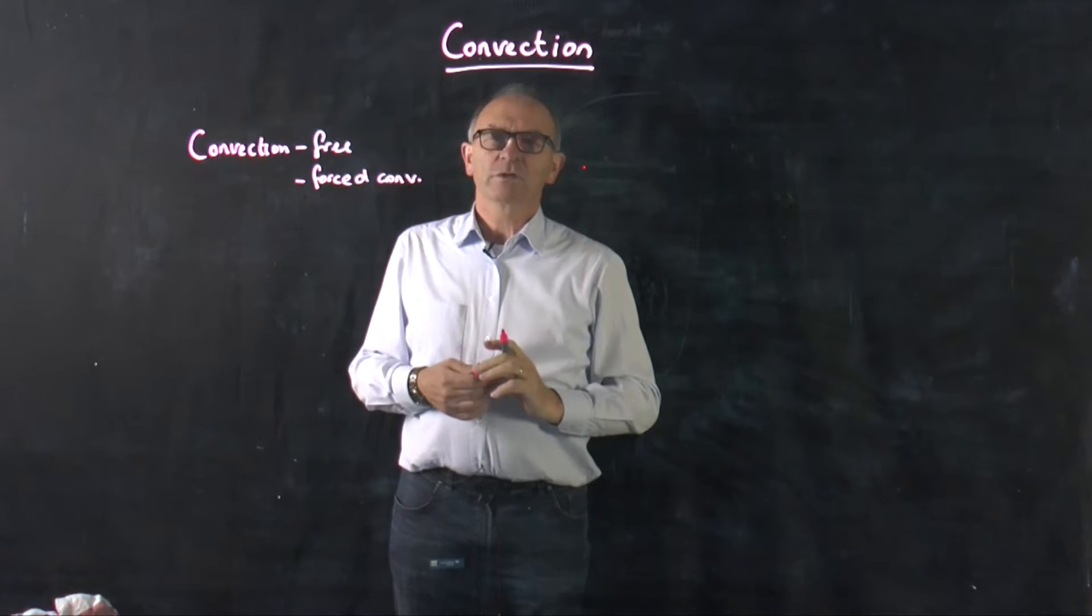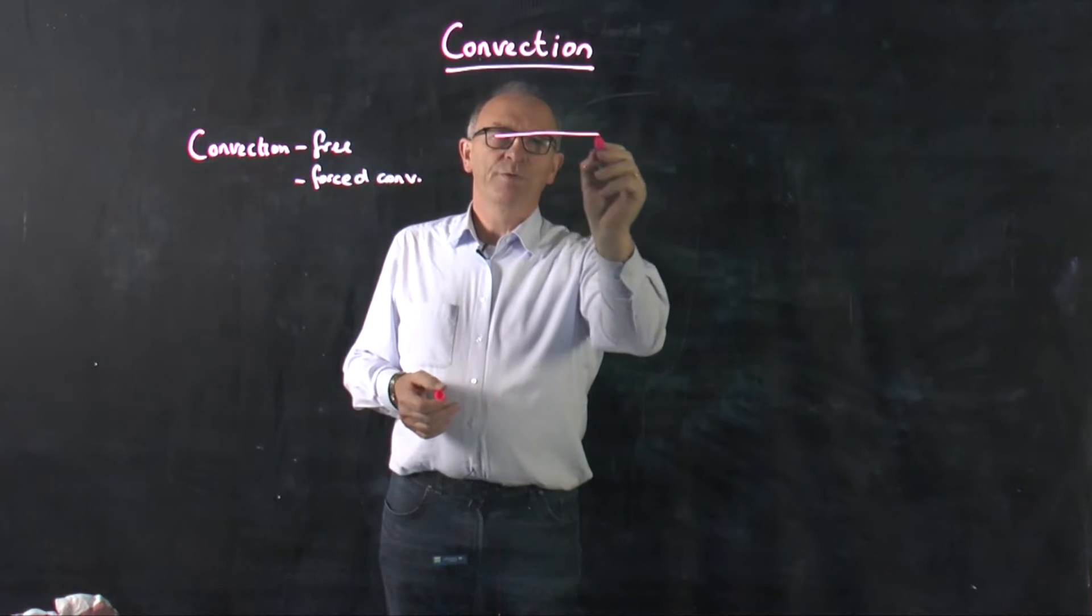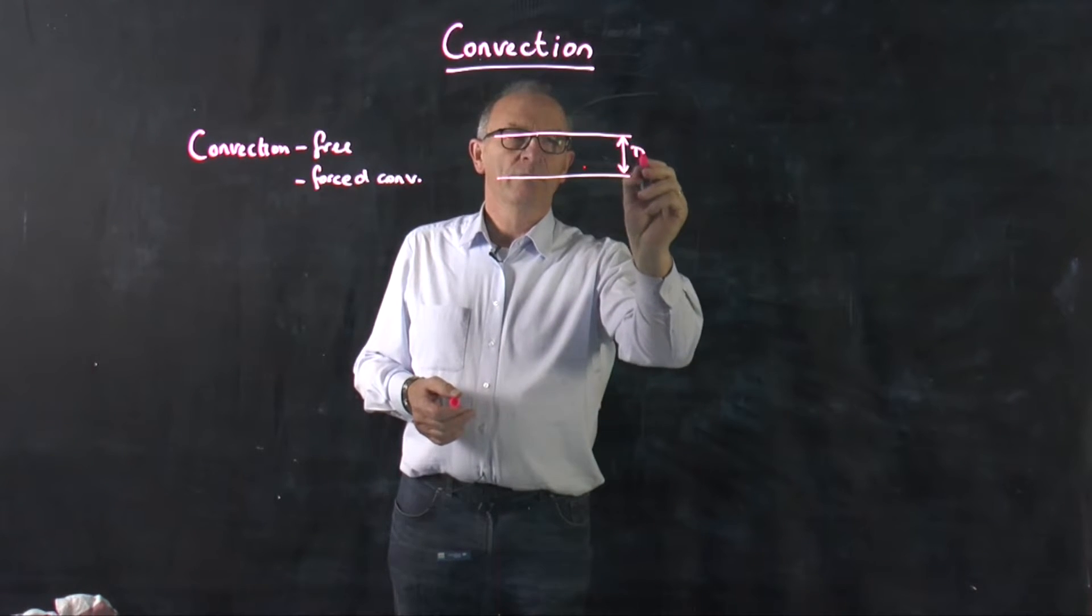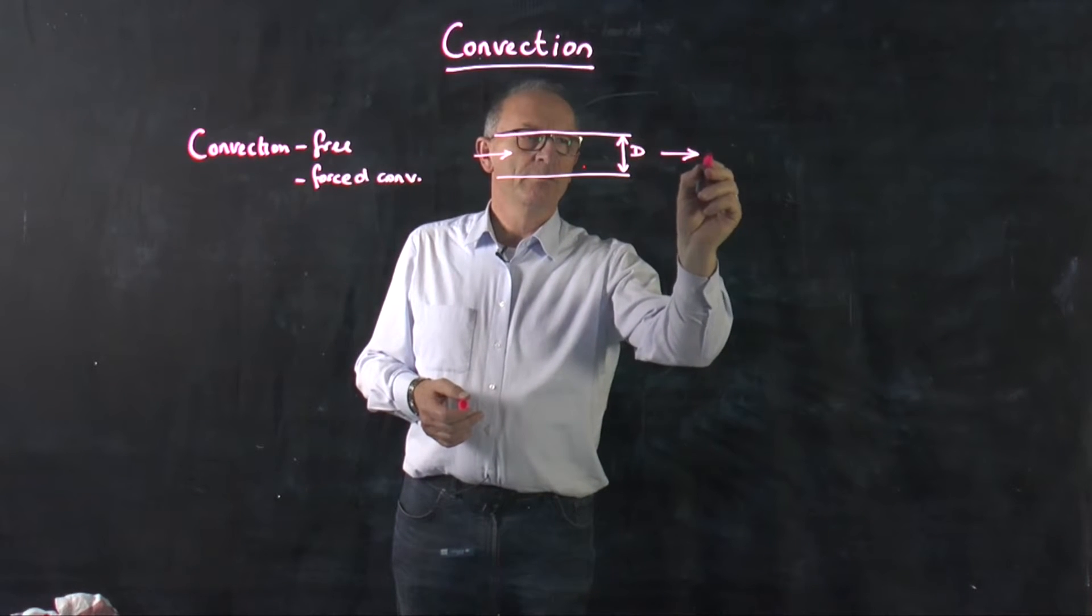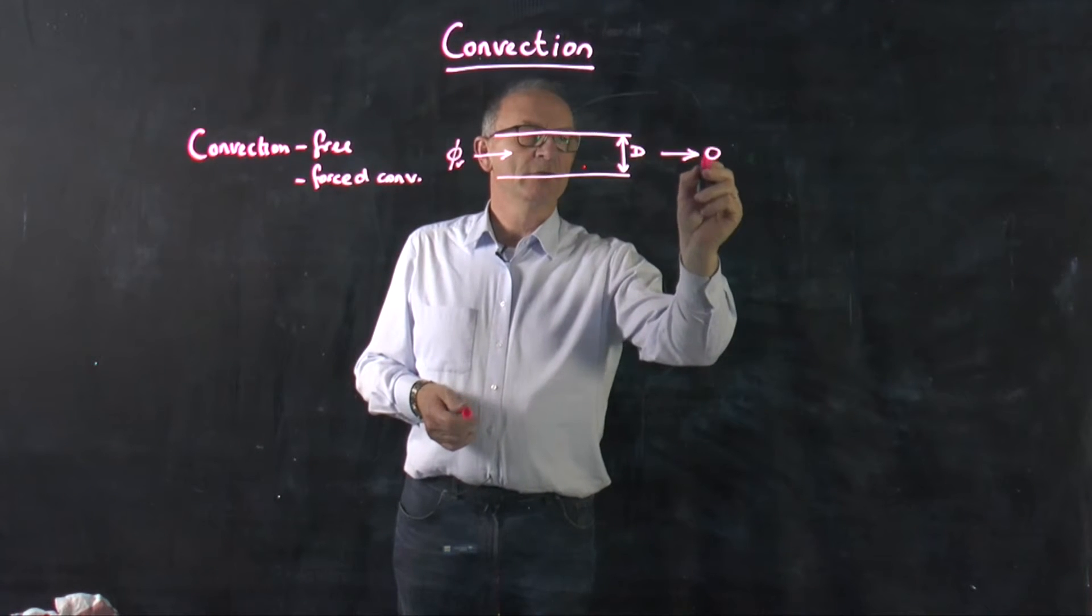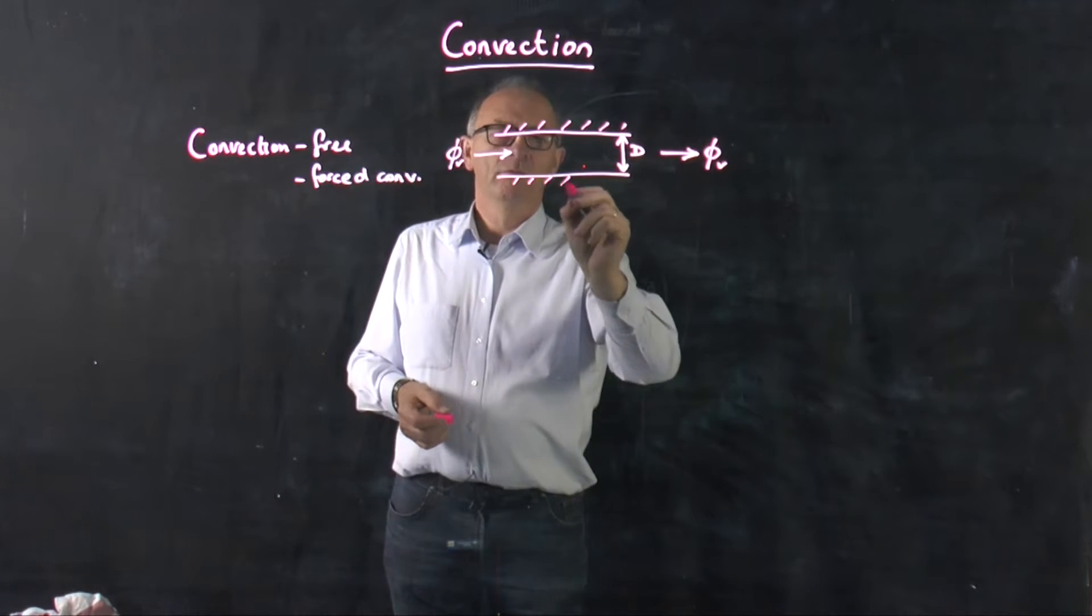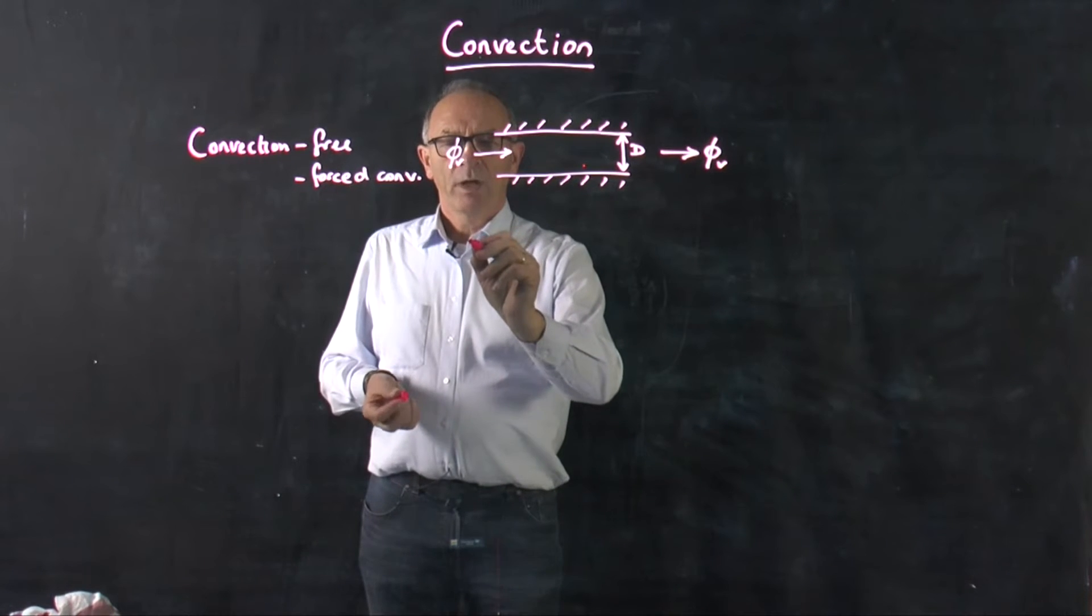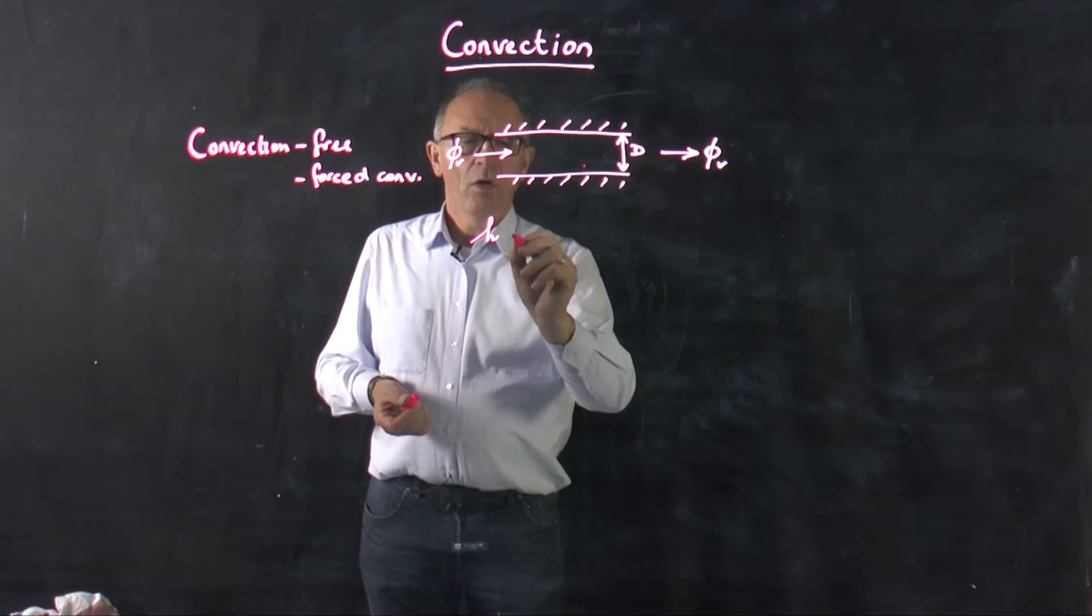I want to focus a little bit on forced convection today and I consider a tube with a certain diameter D and a fluid is flowing through this tube. Let's say a certain volume flow rate is entering and leaving this tube. This is the wall. So now you see it in front of you. And the question I pose here, how does the heat transfer coefficient depend on the diameter?